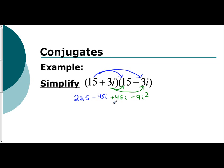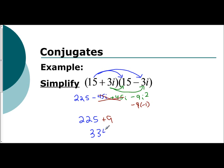You take a look: 45i and negative 45i cancel. You're left with 225, and you have minus 9i squared. i squared is negative 1, so negative 9 times negative 1 is a positive 9. Add them together and you get 234.